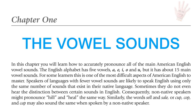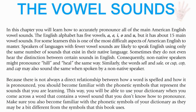Consequently, non-native speakers might pronounce hill and heel the same. Similarly, the words sell and sail, cup, cop, and cap may also sound the same when spoken by a non-native speaker. In this chapter, you will learn how to accurately pronounce all of the main American English vowel sounds. First, you will be briefly introduced to each of the vowel sounds. Then you will study each sound in detail, learn the correct lip and tongue positions, practice them in word groups and sentences, and practice sound contrasts to clearly distinguish between the different vowel sounds.